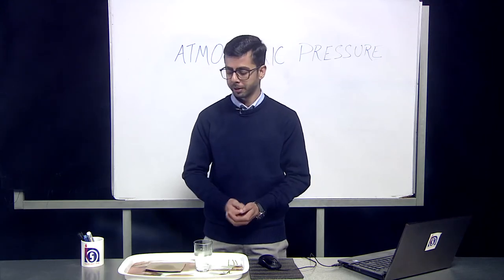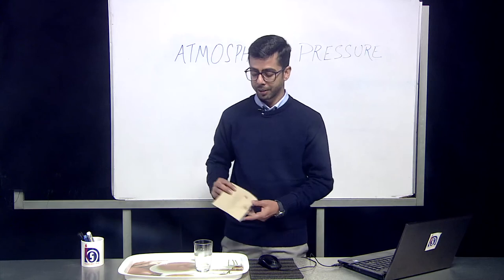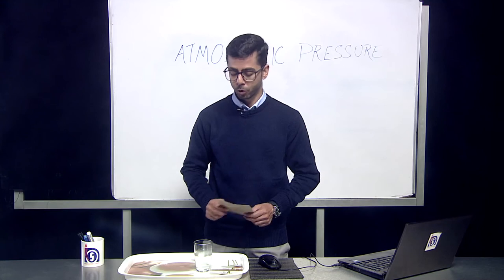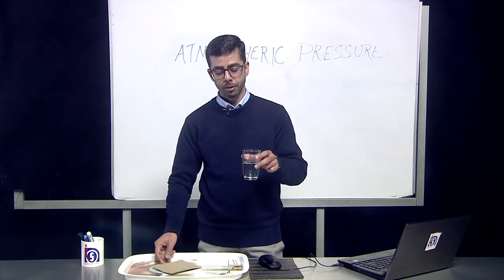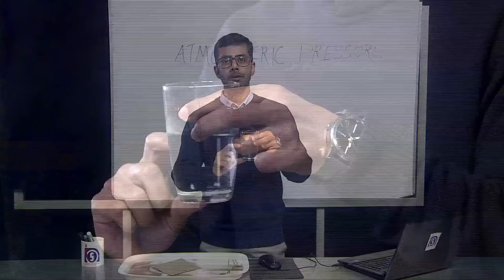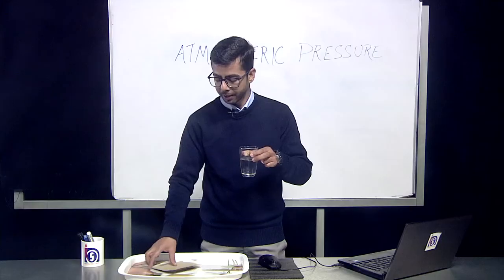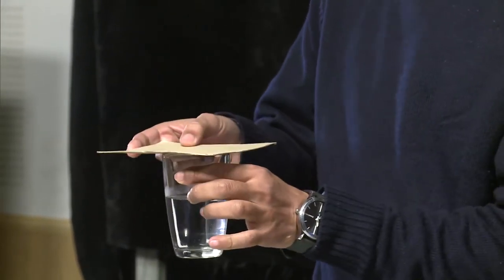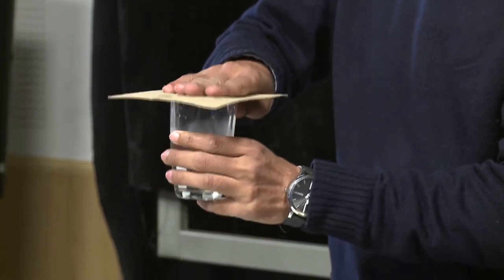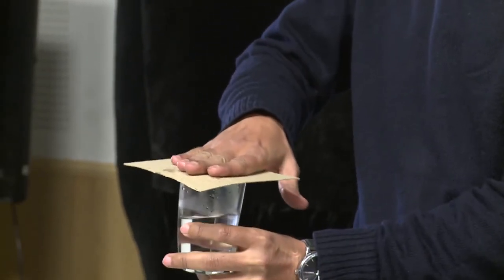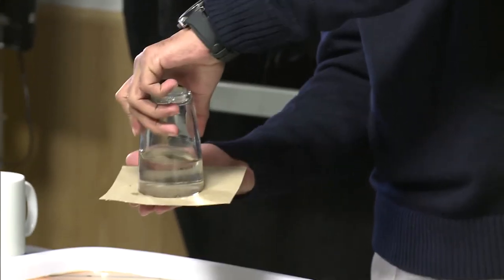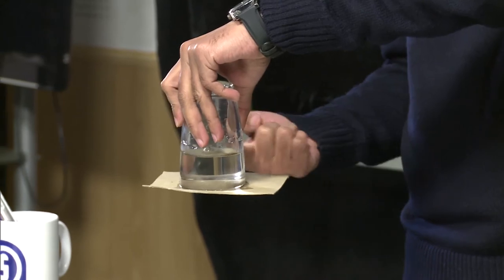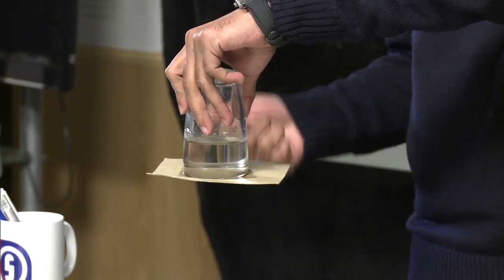First of all we will be demonstrating an activity and try to explain why this phenomenon actually appears. We took a glass of water with a certain level of water in it, and here I am having a simple cardboard. When I put this cardboard and try to invert this glass over the cardboard, you can see the phenomenon that the cardboard holds it tight. Why does it happen?